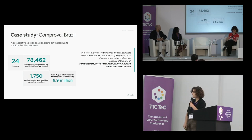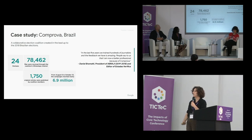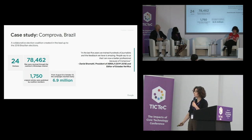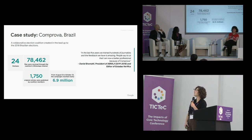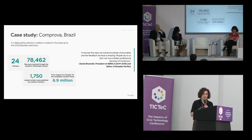Some other case studies: Comprova in Brazil had 24 partners. They received 78,000 files through WhatsApp channels to check and published 1,750 articles together, reaching about 7 million people. Daniel Bramati says: 'In the last five years we trained hundreds of journalists and the feedback we have is amazing. People say to us that they're now a better professional because of Comprova.' That points to an important part of these election coalitions — they provide a lot of capacity building for all the media organizations involved.